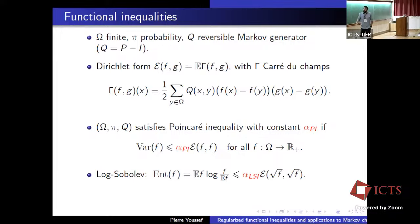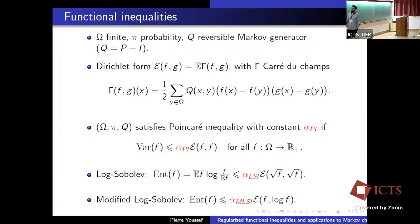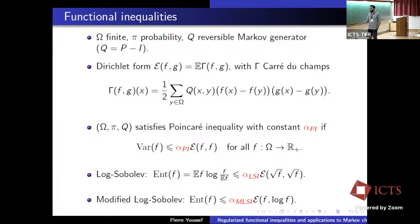Finally, the modified log-Sobolev inequality (MLSI): the left-hand side measures global variation with respect to the entropy, same as log-Sobolev inequality, and the right-hand side is a different Dirichlet form — it's a Dirichlet form of f or sqrt(f). Again, all of these are meant for all functions f, and alpha is the best constant that achieves the inequality.